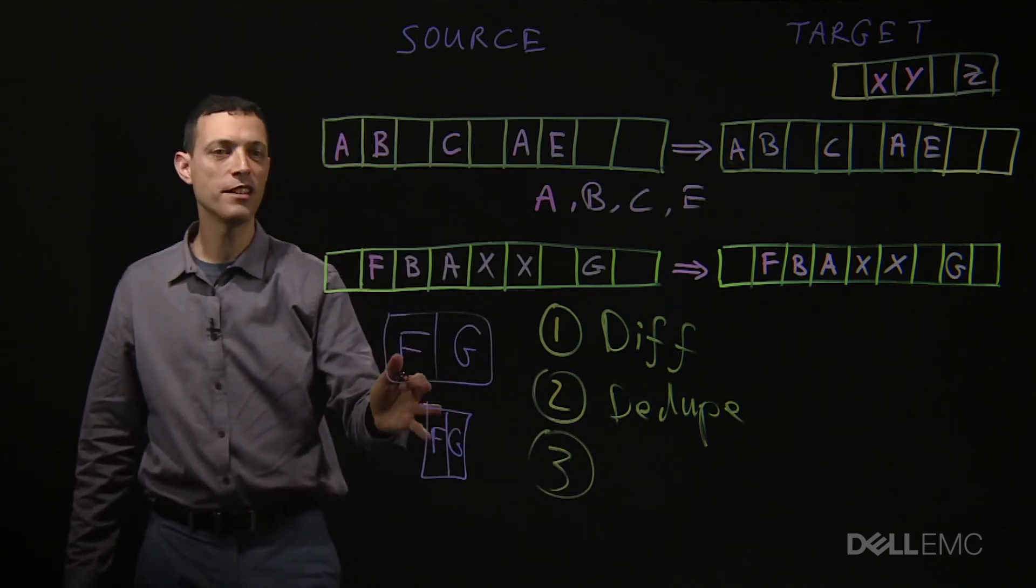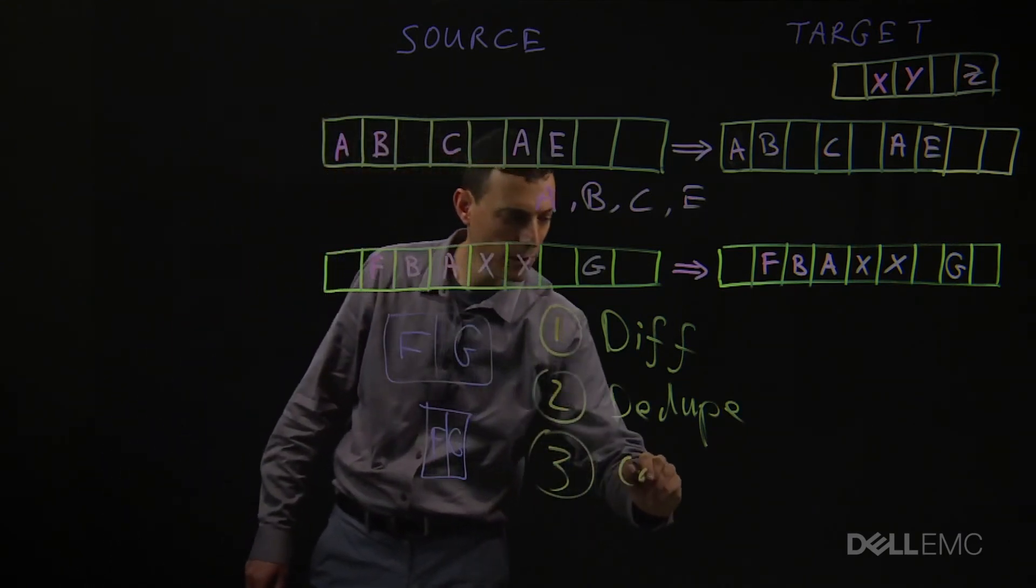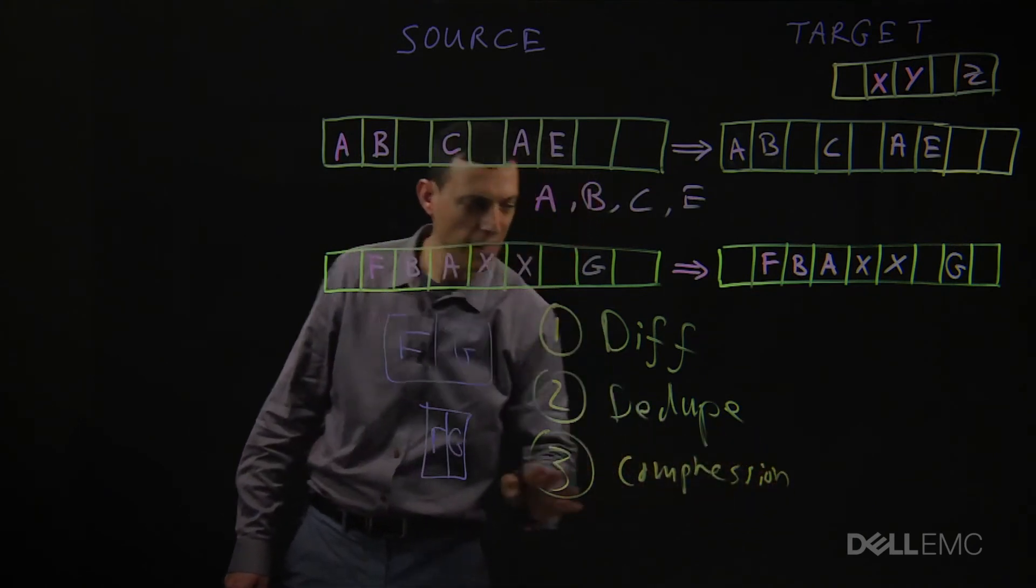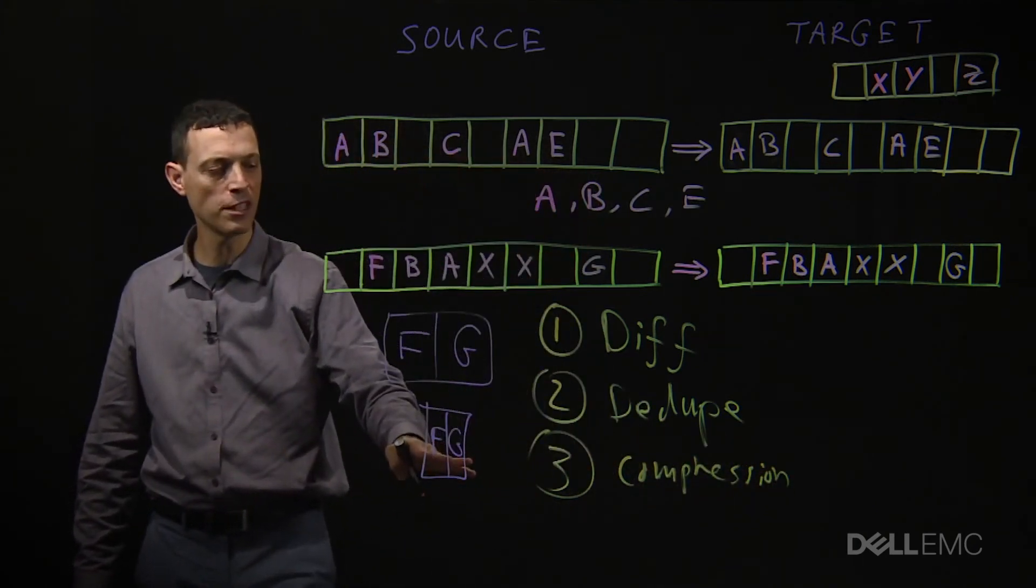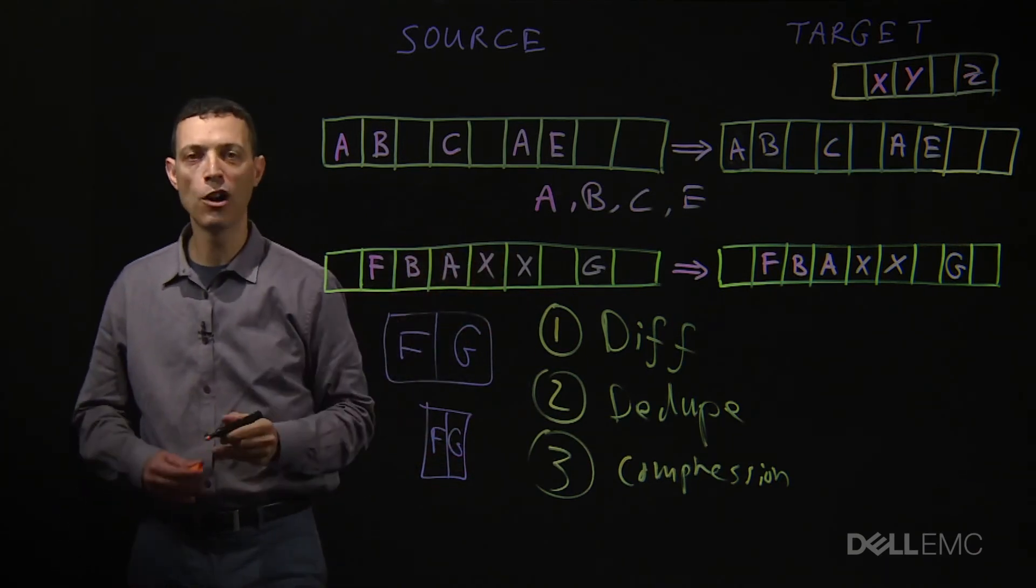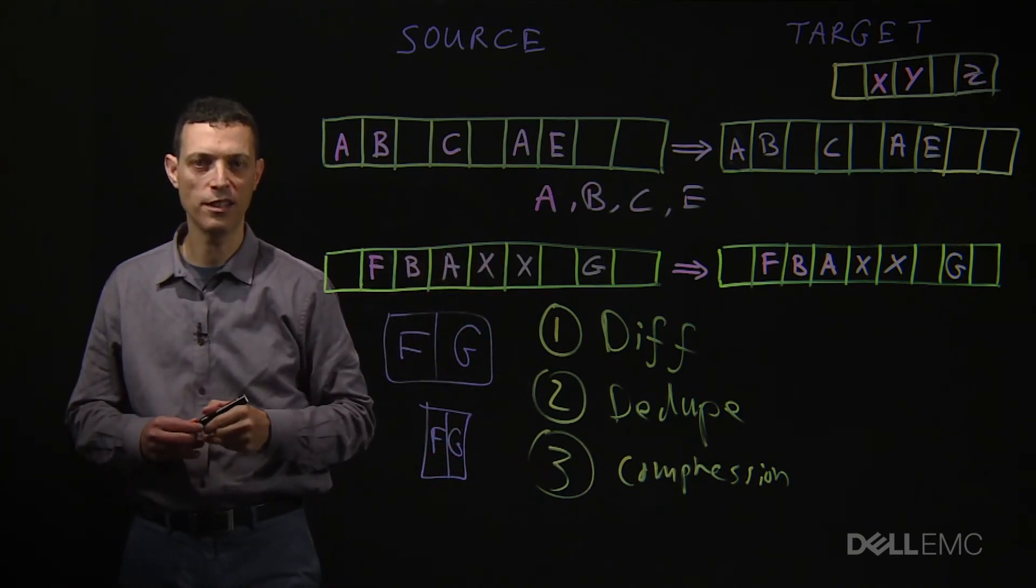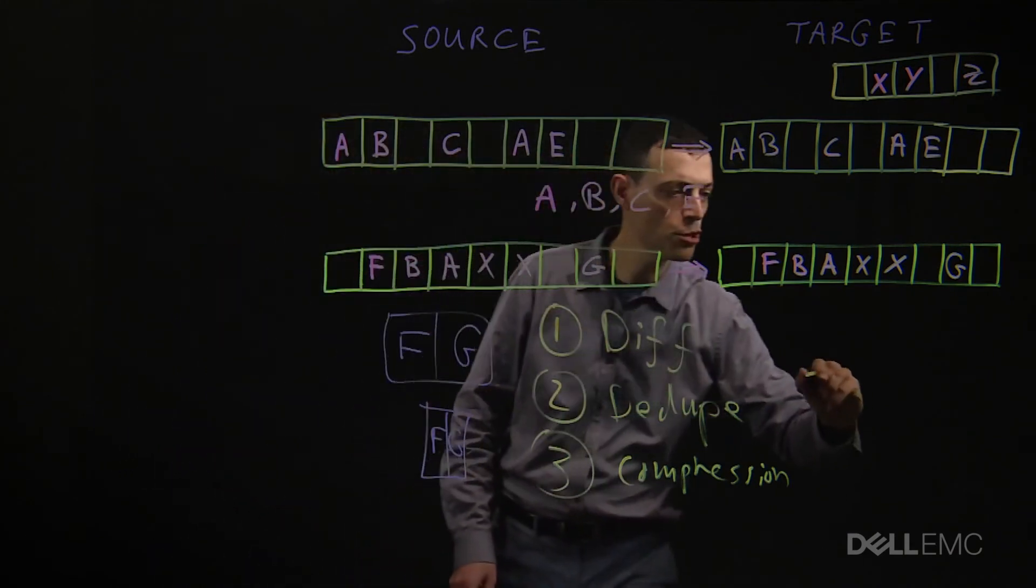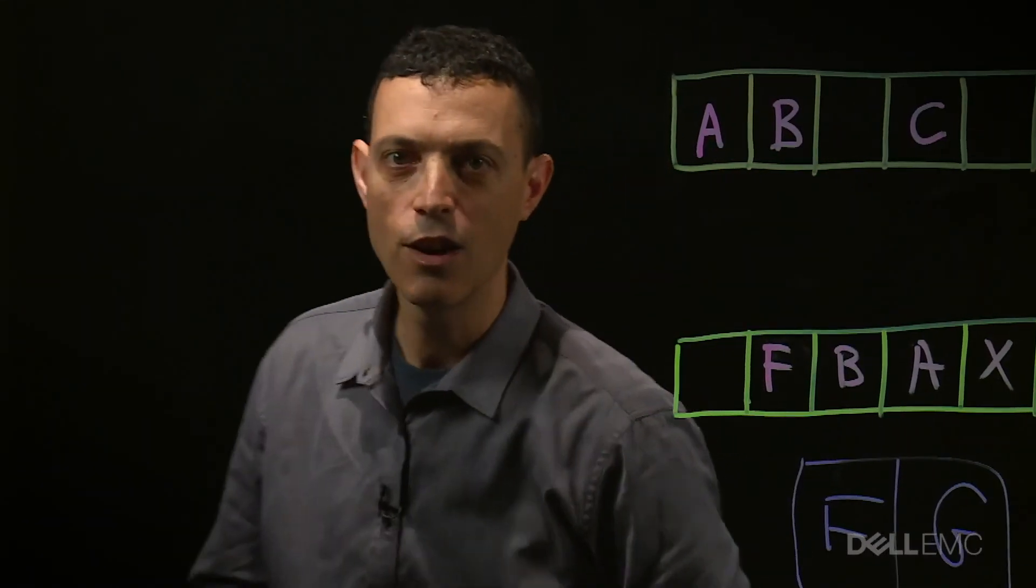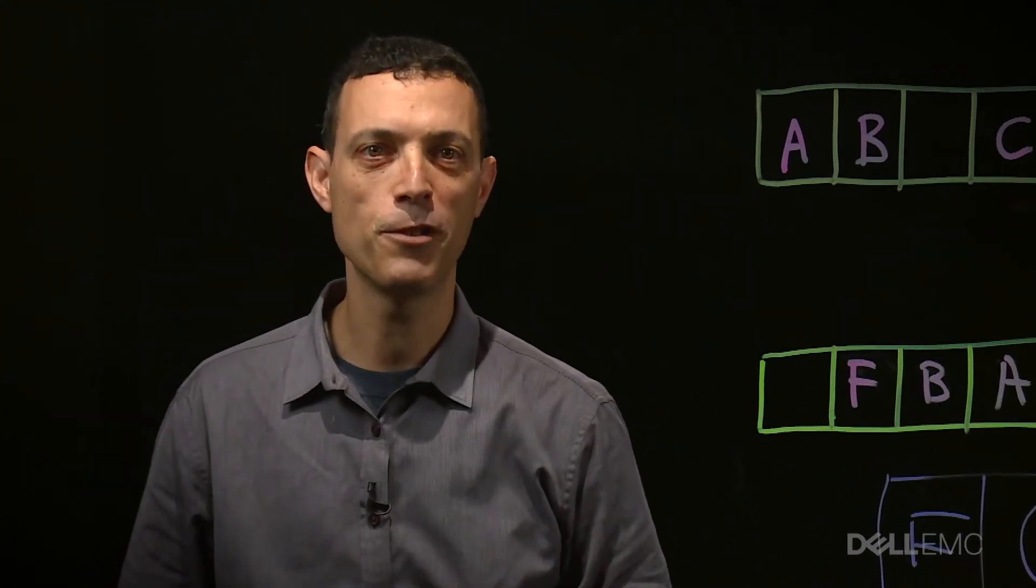Finally, we compressed the data. Ending up with the equivalent of a single block of data for what looked like six blocks of changes in this cycle. So six to one data reduction on the link. Talking about efficiencies.